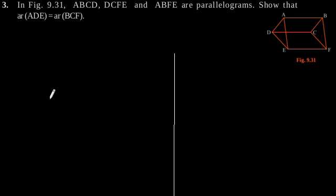Exercise 9.4, Question number 3. In figure 9.31, ABCD, DCFE, and ABFE are parallelograms. Show that area of triangle ADE is equal to area of triangle BCF.